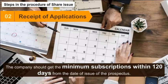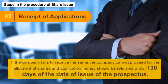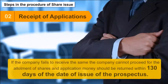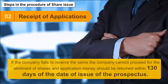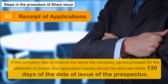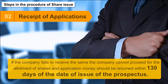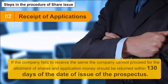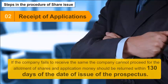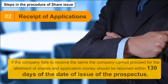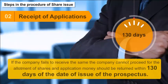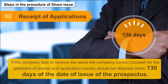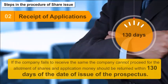If the company fails to receive the minimum subscription, the company cannot proceed with the allotment of shares, and the application money must be returned within 130 days of the date of issue of the prospectus.